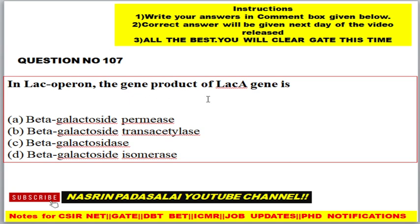Question number 106: Type 1 hypersensitivity reaction involves — Options: A) IgD, B) IgM, C) IgE, D) IgG. Question number 107: In the lac operon, the gene product of the lac A gene is — Options: A) Beta-galactoside permease, B) Beta-galactoside transacetylase, C) Beta-galactosidase, D) Beta-galactoside isomerase.